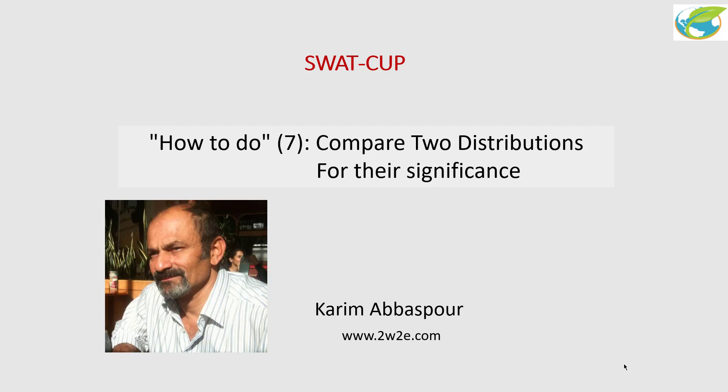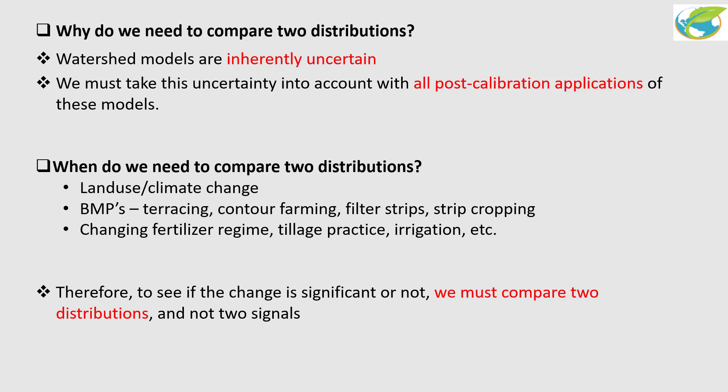In this short video I'm going to show you how to compare two distributions for their significance. We need to compare two distributions because watershed models are inherently uncertain, and we must take this uncertainty into account with all of the post-calibration applications of the model.